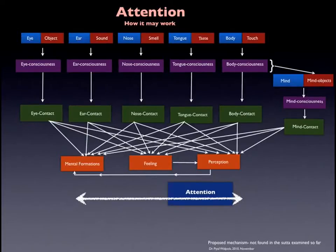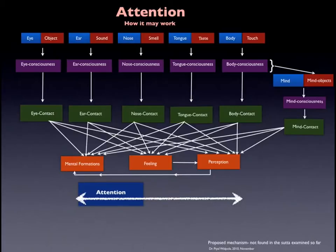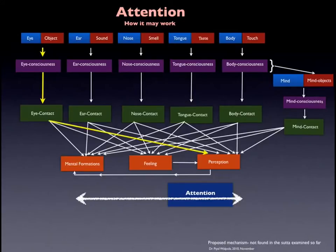There's another concept called attention we have to learn here. Attention is like the gatekeeper of the senses, and it will direct one track at a time. When the eye meets an object, eye consciousness arises — this is the track shown in yellow. From eye consciousness, eye contact arises, and from there the perception of the eye can arise.